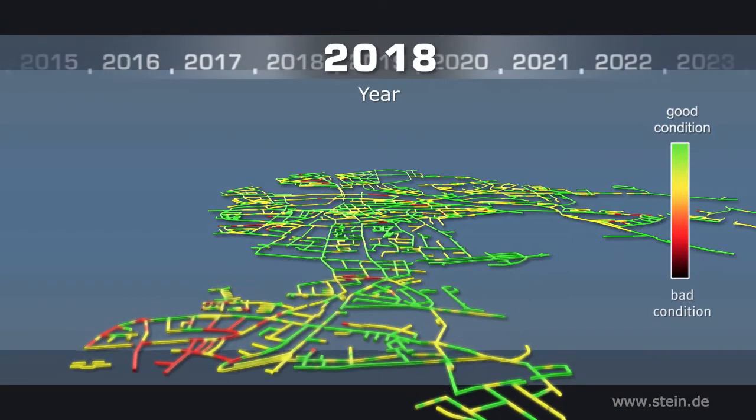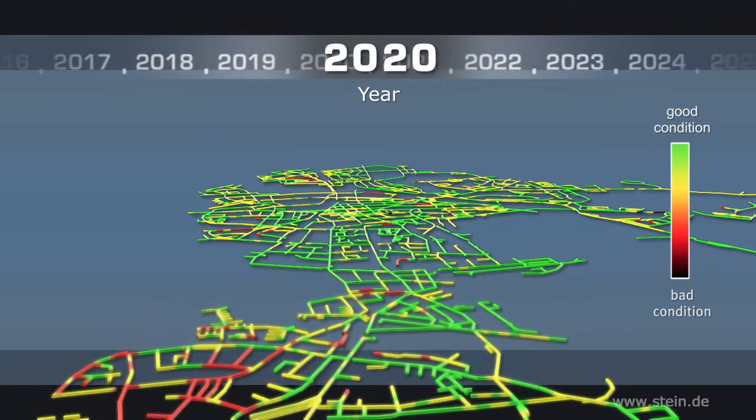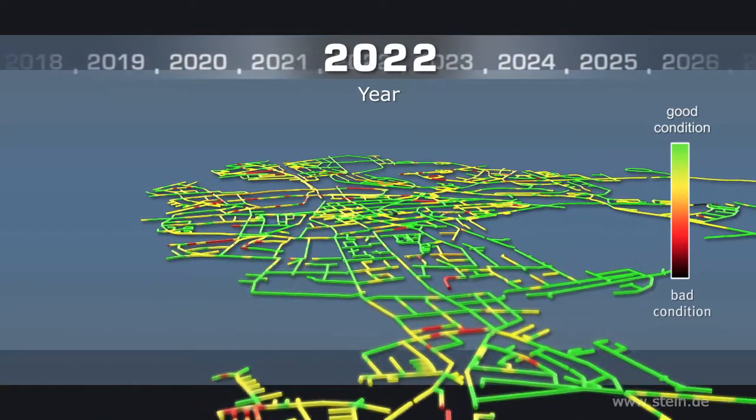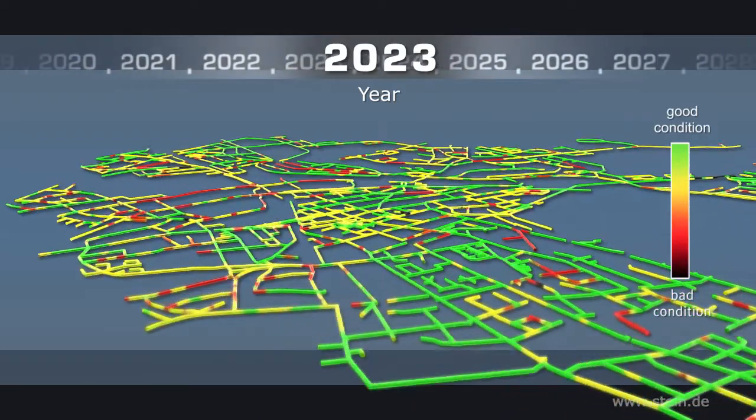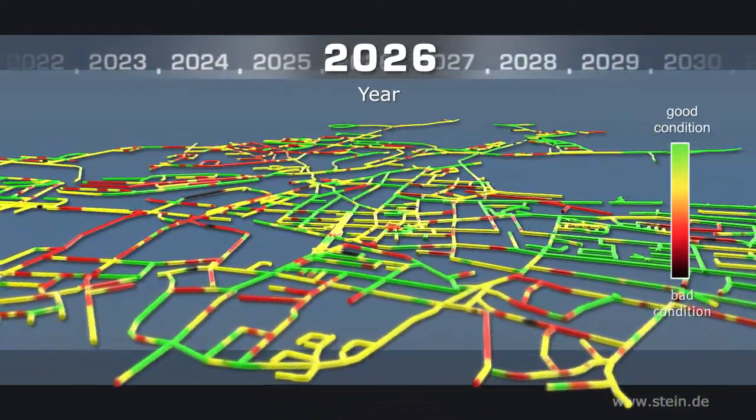Based on section assessment and age deterioration, behavior of the network can be determined. As sections deteriorate differently, the network is clustered according to age-relevant attributes.